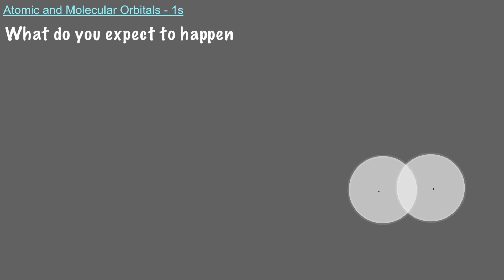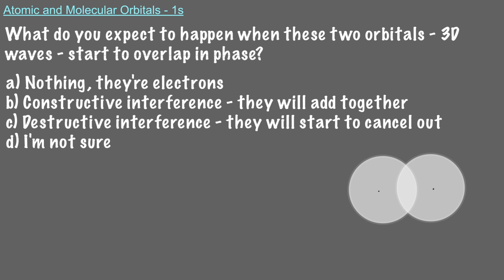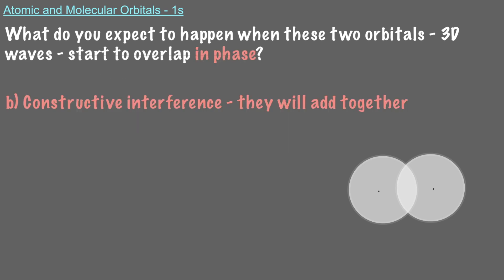What do you expect to happen when these two orbitals, 3D waves, start to overlap in-phase? As we know, 3D waves that overlap with each other in-phase will add together to make a larger wave. This is called constructive interference.